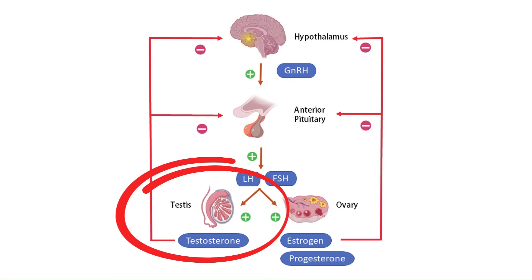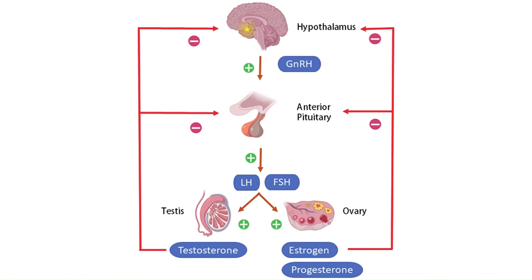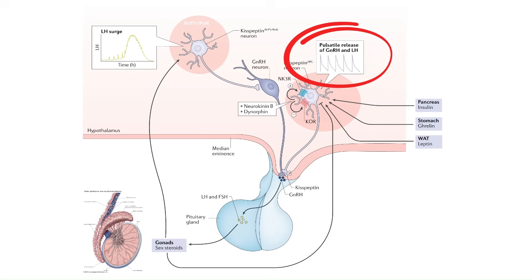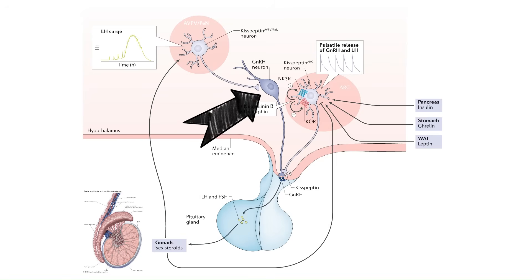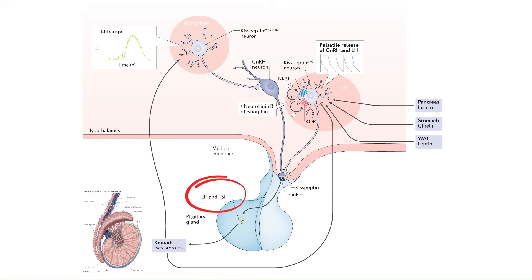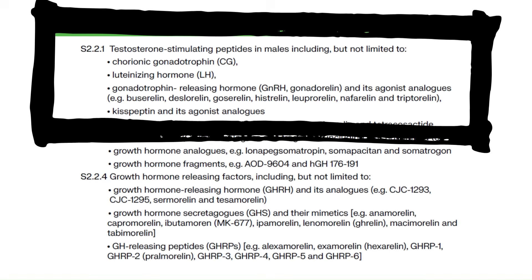The HPG axis is the pathway in the body that leads to the testes being stimulated to produce testosterone or sperm. Everything you've ever heard about increasing testosterone acts on some part of this HPG axis. It starts in the brain where kisspeptin neurons in the hypothalamus control the pulsatile release of gonadotropin releasing hormone, or GnRH, from the GnRH neurons in the hypothalamus.